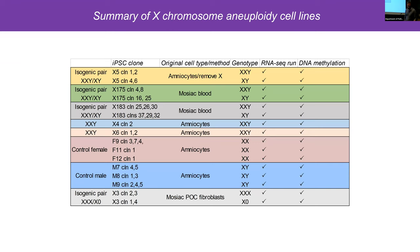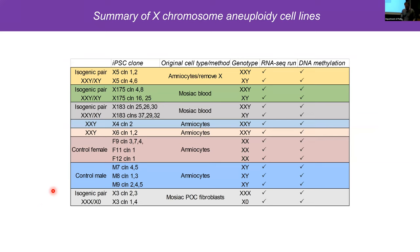Here I'm showing all the different cell lines we derived and isolated. In yellow is an isogenic pair from the selection method. We have two isogenic pairs from mosaic individuals, plus independent individuals — cell lines from Turner syndrome patients (each line is a different person), control females, and control males. We also have isogenic pairs from XXX and XO individuals.